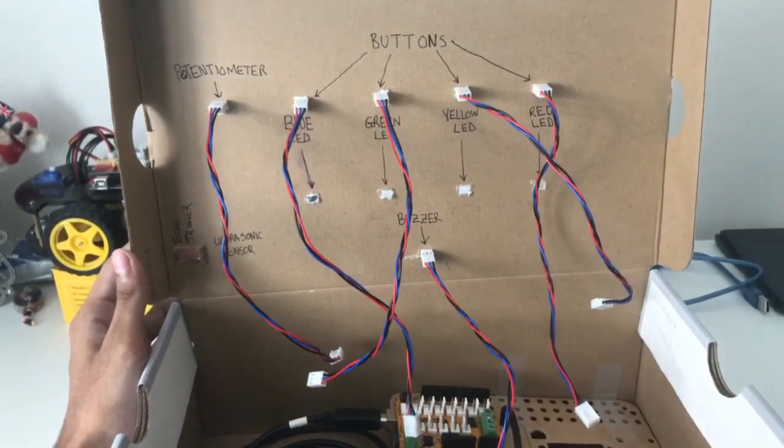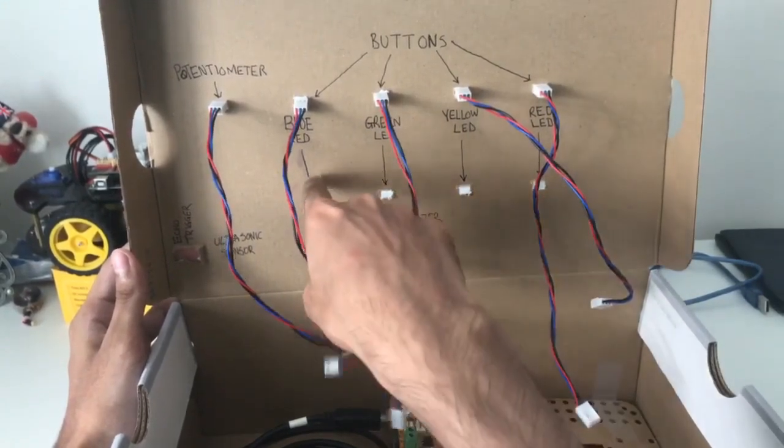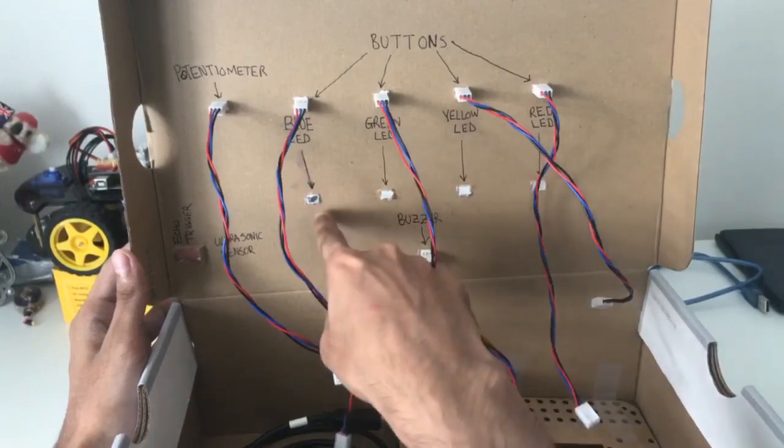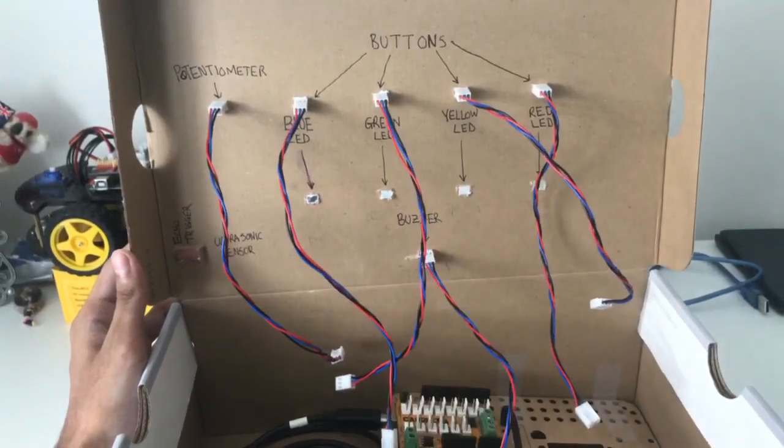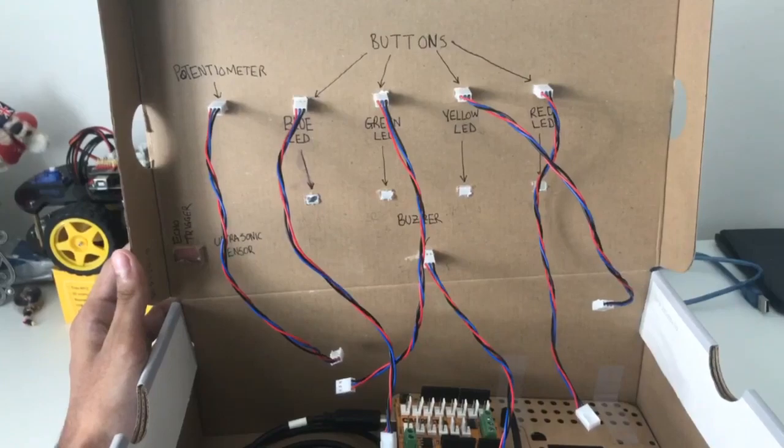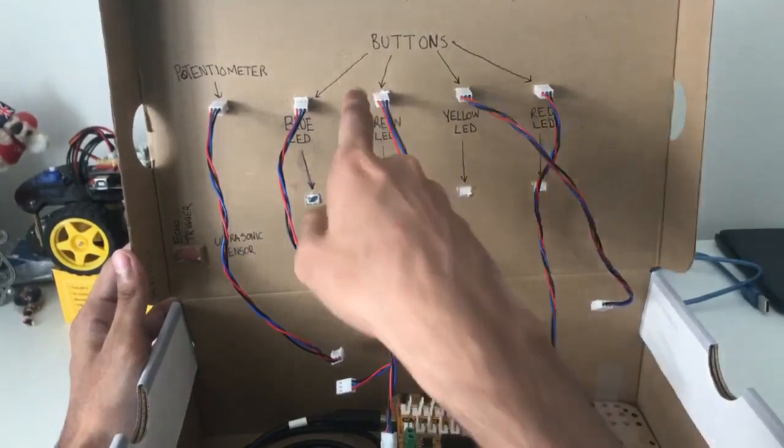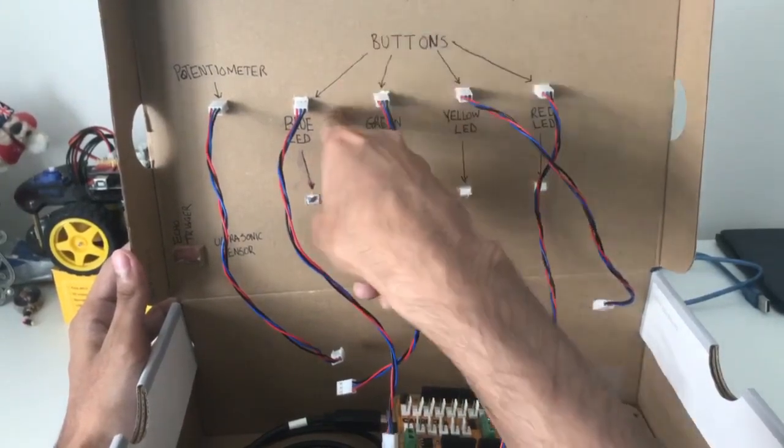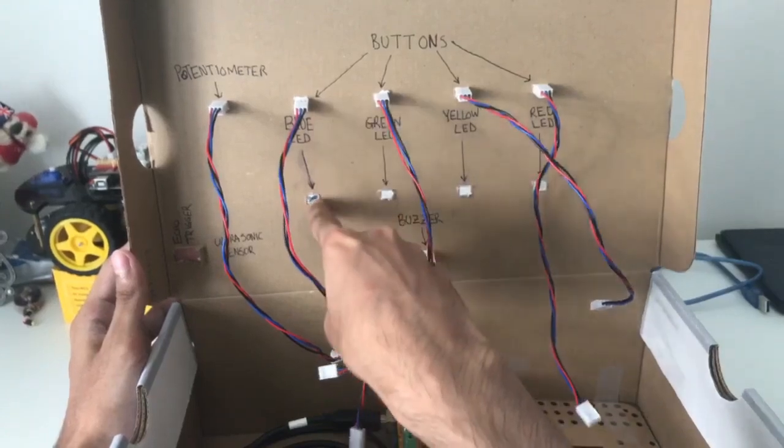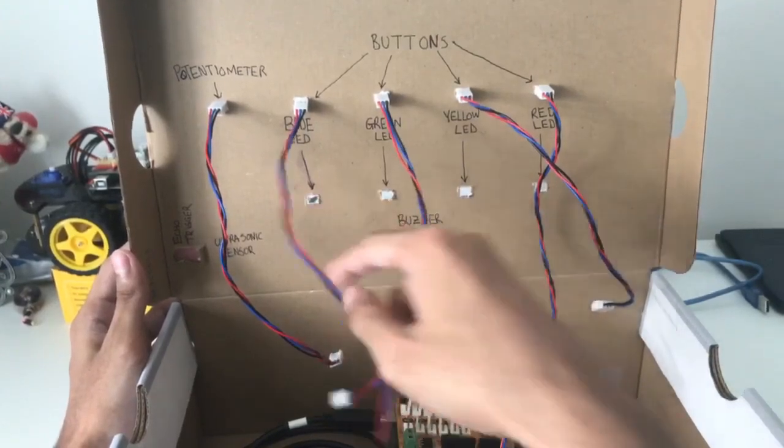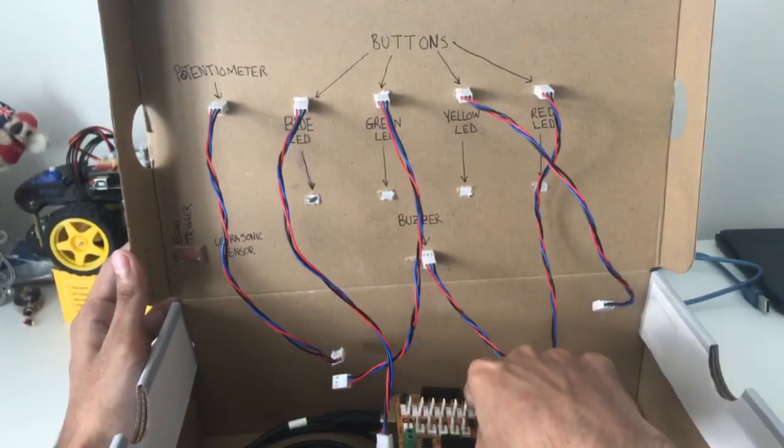Since we're not using any LEDs in this project, we can ignore these spots here. However, if you want to customize the project and make it even better, you can connect your buttons—for example, your blue button to the associated blue LED—and then connect those wires to the remaining outputs.